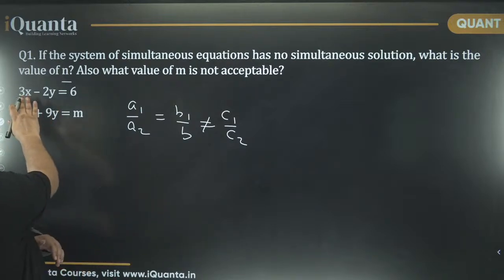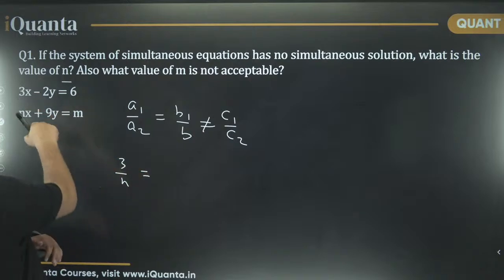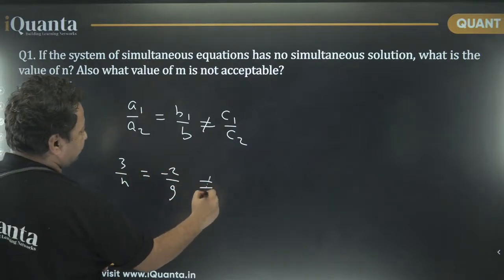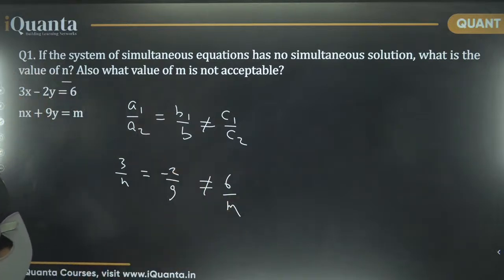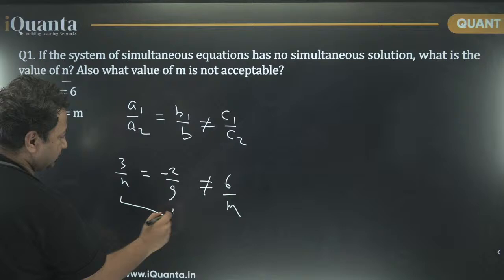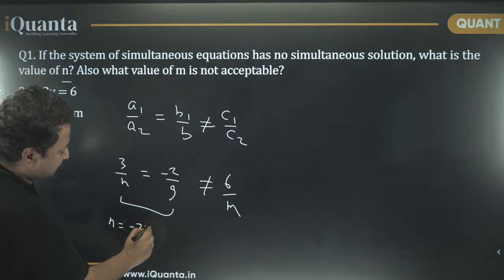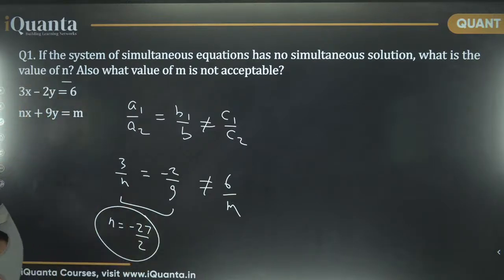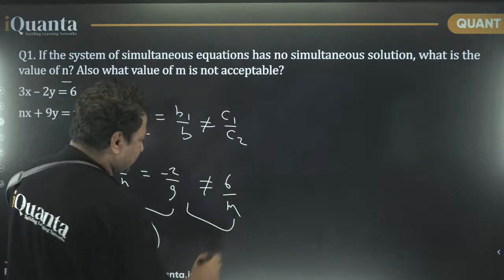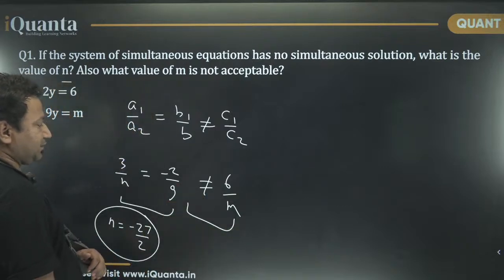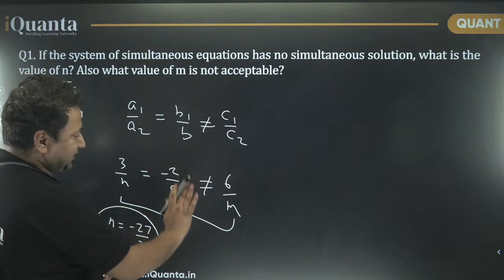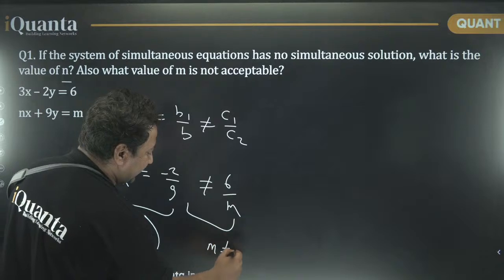You understand this, right? So, A1 is 3. 3 upon N is equal to minus 2 upon 9. Should not be equal to 6 by M. So, if I solve these two by cross multiplication, 9 goes here, minus 2 comes here. So, we will have N is equal to minus 27 by 2. This will be the value of N. And what is not acceptable for M? Let's solve these two now. So, if I cross multiply, 9 goes there, 2, 3 by 2. So, minus 27. So, M should not be equal to minus 27.